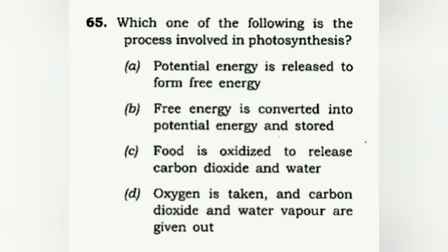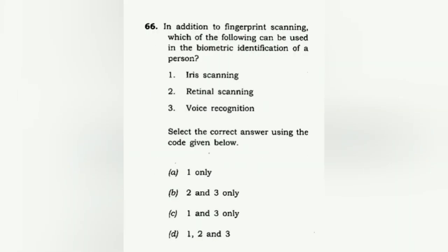Which one of the following is the process involved in photosynthesis? The options: potential energy is released to form free energy; free energy is converted to potential energy; stored food is oxidized to release carbon dioxide and water; oxygen is taken in and carbon dioxide and water vapor are given out. Initially we'd pick D, but water vapor is not the correct output here. The correct answer is B: free energy is converted to potential energy.